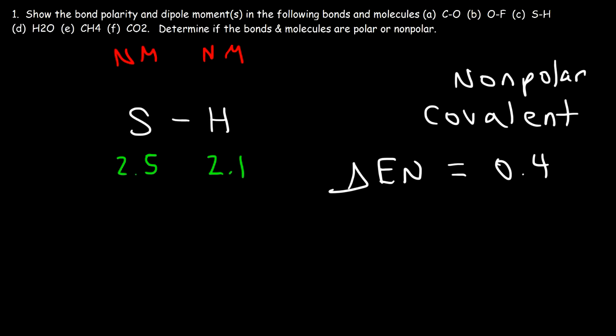Sulfur is more electronegative than hydrogen, so sulfur will have the partial negative charge and hydrogen will bear the partial positive charge. To draw the dipole moment, we point the arrow towards the more electronegative sulfur atom. And so that's it for that example.